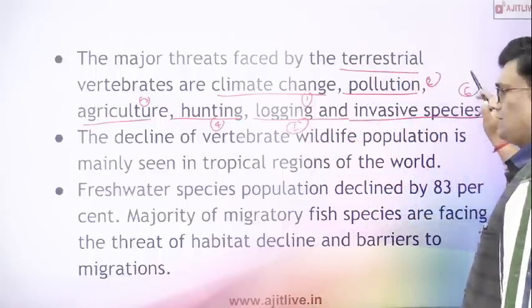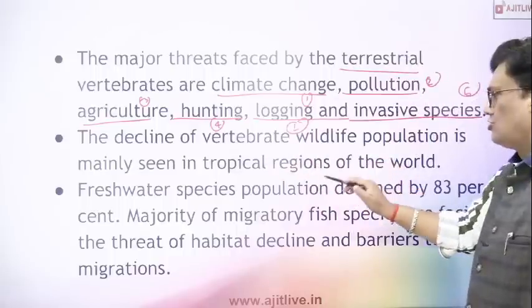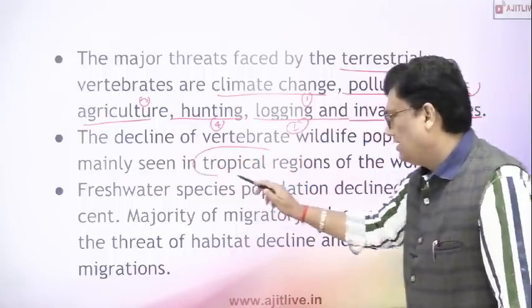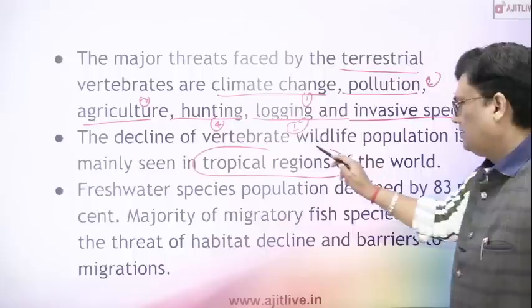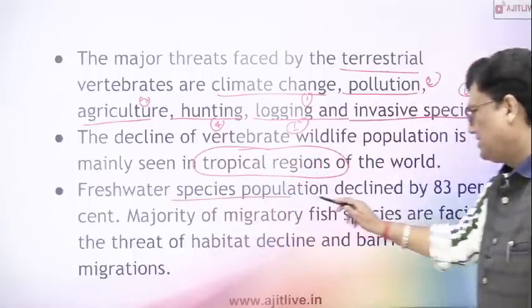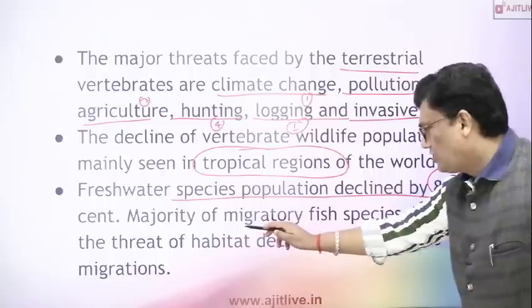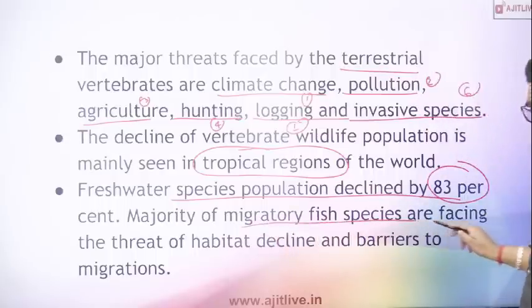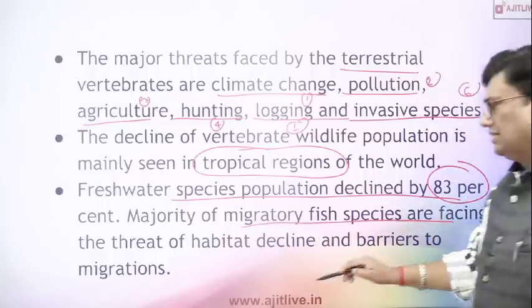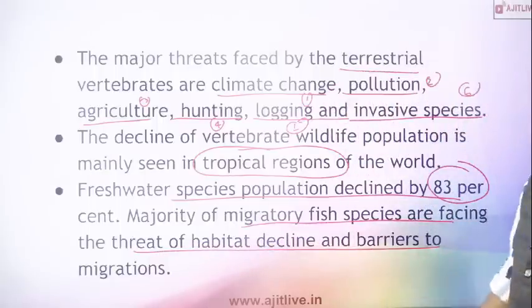Freshwater species populations have declined by 83% — a staggering figure. The majority of freshwater fish species are facing threats from habitat decline, water pollution, industrial waste, agricultural runoff, and degradation of lakes, rivers, ponds, and fresh water ecosystems. Barriers to migration are also an important threat to freshwater species.